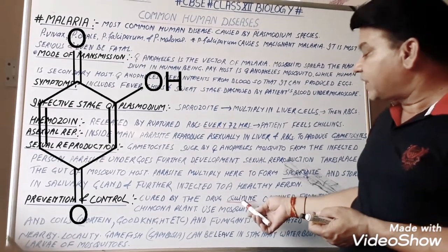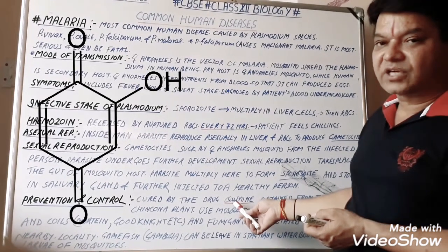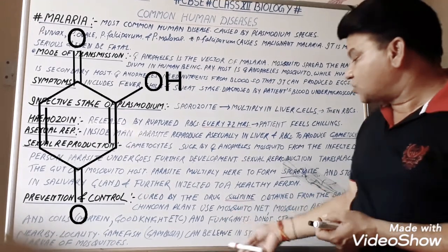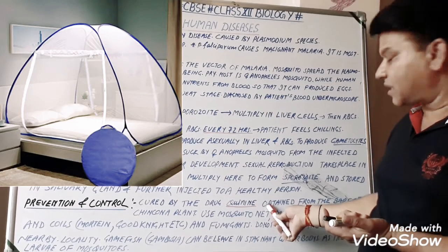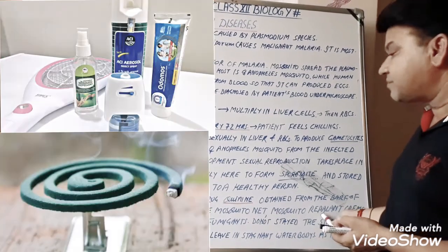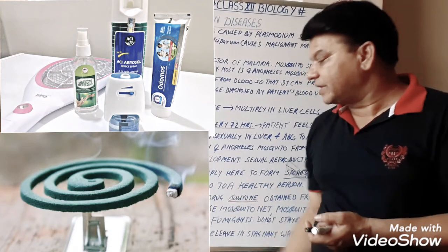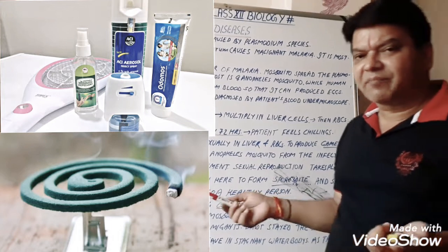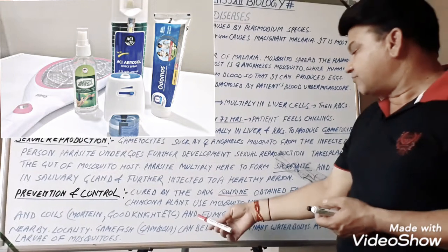Hydroxychloroquine is also used as a treatment. For prevention, we can use mosquito nets. Mosquito repellent creams such as Odomos and mosquito repellent coils such as Mortein, Goodnight, and others are also available in the market. Fumigants can also be used.